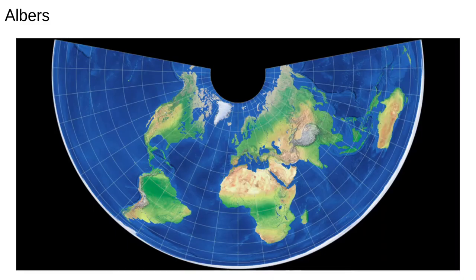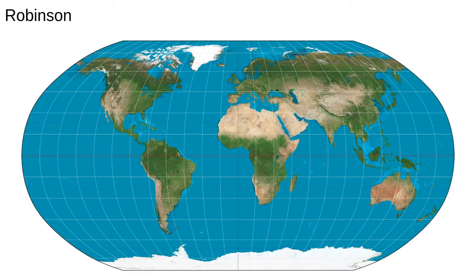Peters projection is an equal area projection. These projections show areas accurately, but distort shapes. Here's another one, the so-called Albers projection. Here, instead of projecting onto a rectangle, the globe is first projected onto a cone, and then the cone is unwrapped. There are also compromise projections, which try to balance requirements of shape and area. For example, the Robinson projection shown here is one of my favourites.